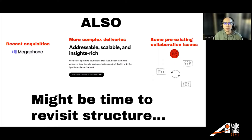At the time, we were working on this thing called the Spotify Audience Network, which is a much more complex delivery just because various different areas were working on it at the same time. And we were working on some pre-existing collaboration issues — noticing that across different product areas, we were having trouble working together effectively. So all these factors combined indicated that it might be time to revisit structure.